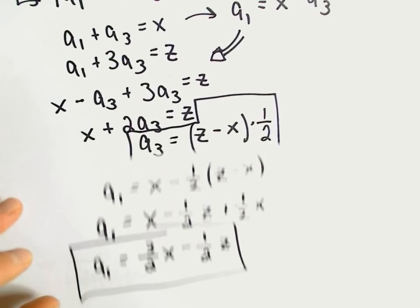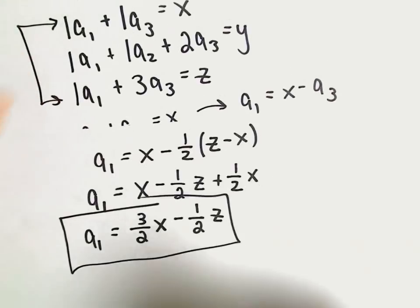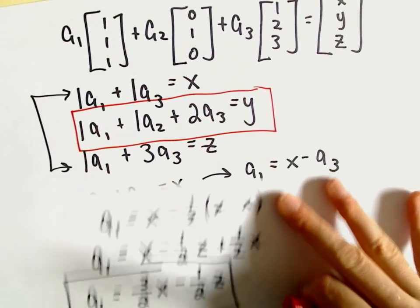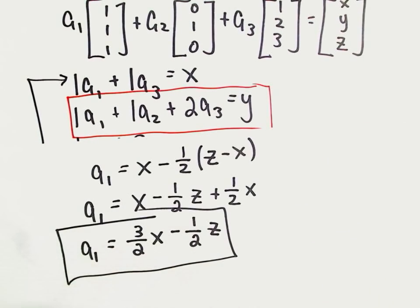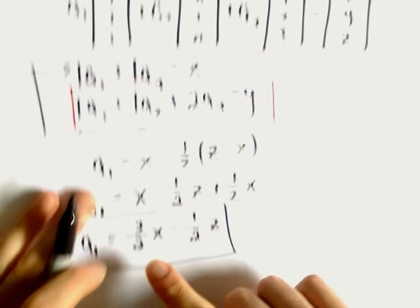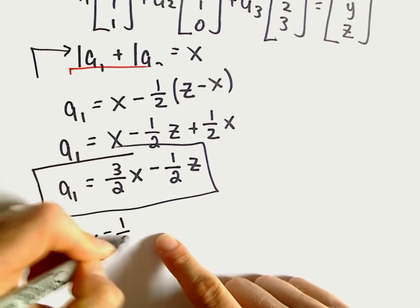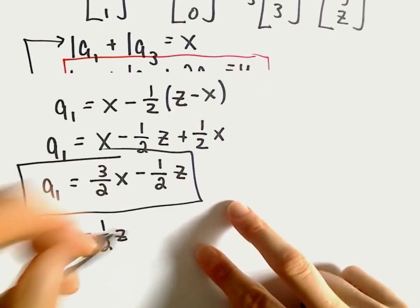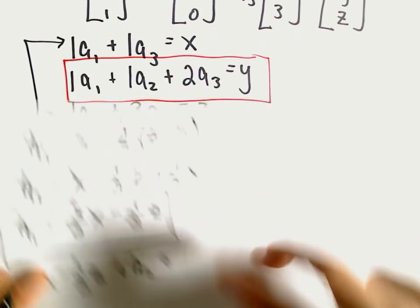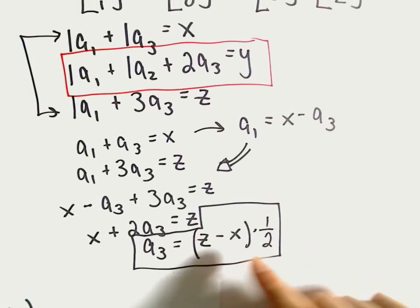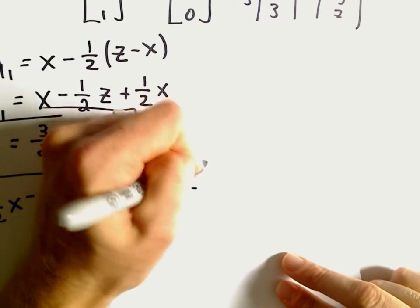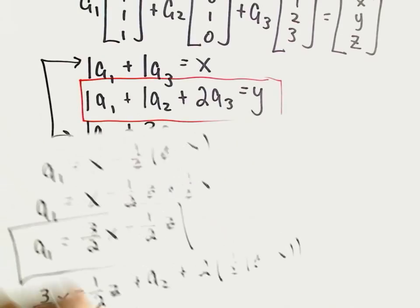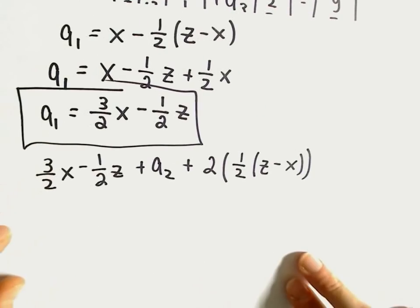And last but not least, let's see, I think the only equation we haven't really played with yet is our second equation from before. Right? We haven't done anything with this one yet. We've got a1 solved for. We've got a3 solved for. We just need to solve for a sub 2 now. So it says a1, let's plug that in. Well, we know that that's 3 over 2x minus 1 over 2z. It says then we have plus a2, that's the one we don't know. And then 2 times a3. And again, a3 we said is 1 half times z minus x. So, let's see, 2 times 1 half times z minus x. And we said all of that is going to be equal to y. So let's set it equal to y.